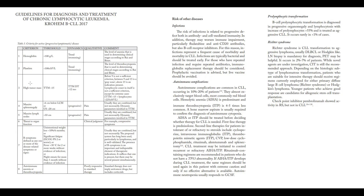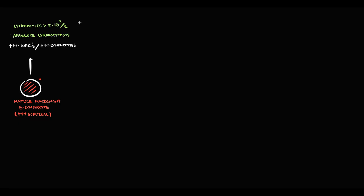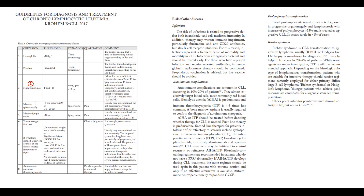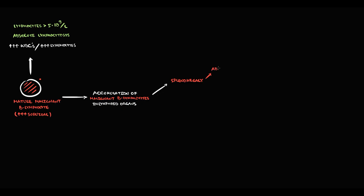WBC and lymphocyte count are criteria for disease progression because they reflect tumor mass. With time, some malignant B-lymphocytes begin to leak into lymphoid organs where they accumulate. First, it's the spleen — accumulation of malignant B-lymphocytes in the spleen causes splenomegaly, and massive splenomegaly is a criterion for disease progression. Splenomegaly manifests with abdominal discomfort and early satiety, causing loss of appetite. If the patient has an enlarged spleen, it compresses anatomical structures nearby and causes discomfort.